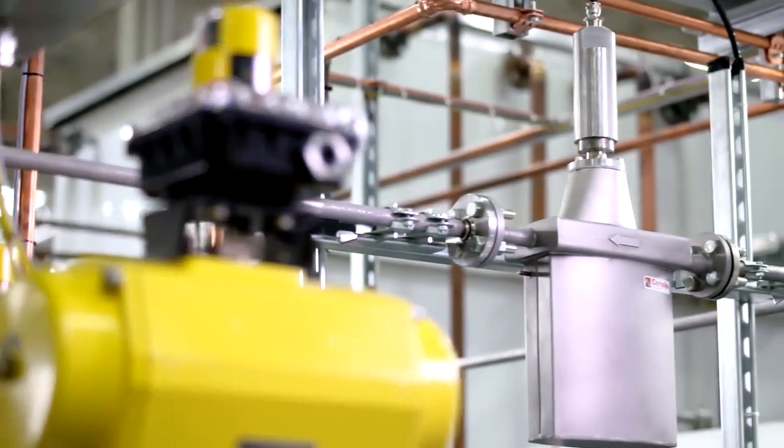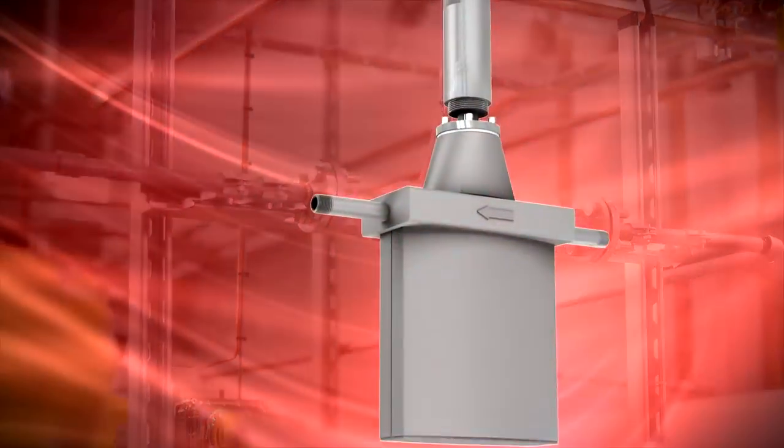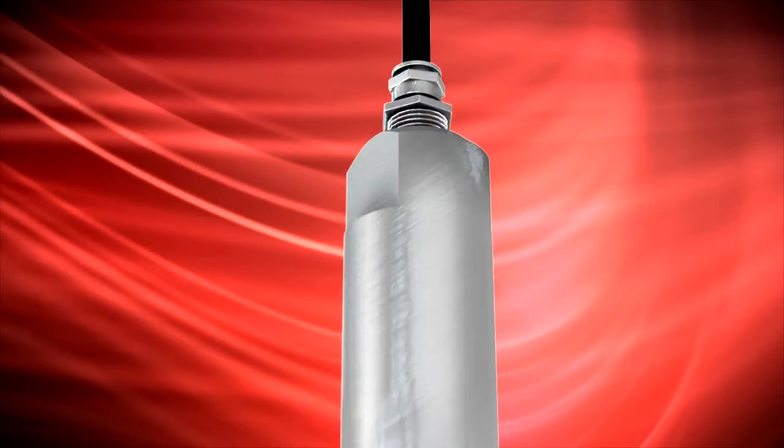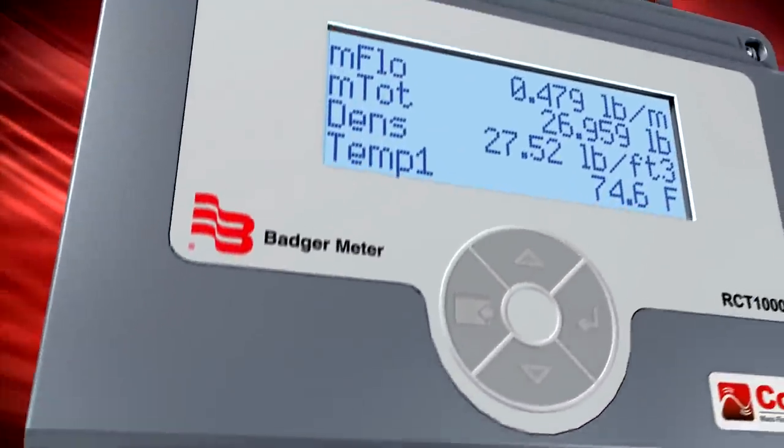More than simply a flow meter, the RCT1000 Coriolis Flow System by Badger Meter is capable of controlling process flow by sending commands to other instrumentation, such as valves and pumps.